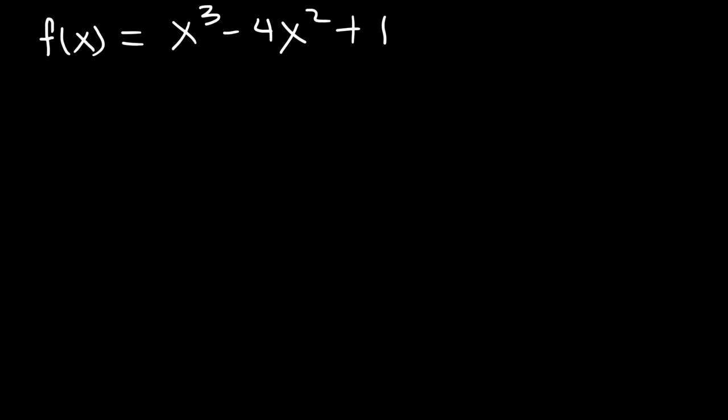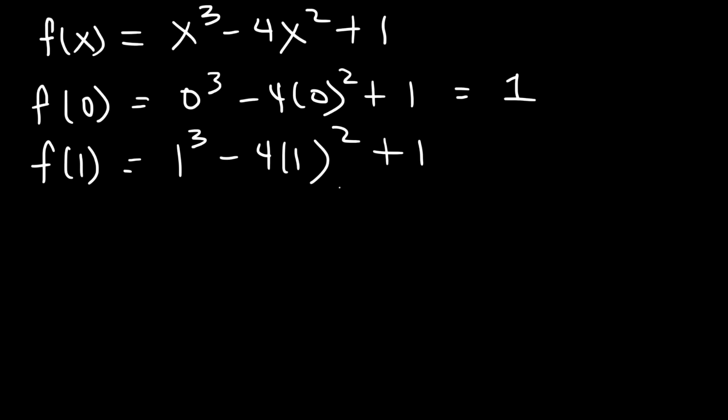So we have to guess a value for x. We have to pick a value to start with. So let's see what the function value is when x is 0. So f(0) is going to be 1. Now let's pick the next best number. Let's try 1. So this is going to be 1 to the third minus 4 times 1 squared plus 1. So that's 1 minus 4 plus 1, which is negative 2.